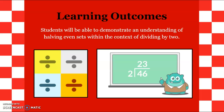The learning outcomes: students will be able to demonstrate an understanding of having even sets within the context of dividing by two. At the beginning, students should start with numbers that are divisible by two — it'll be easier. But if students feel they're more advanced, I'll allow them to divide numbers that aren't divisible by two so they can practice remainders, which is a little bit ahead of where the rest of the students are.